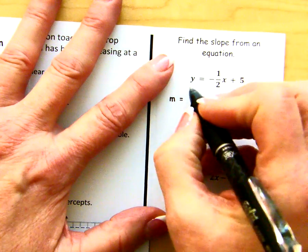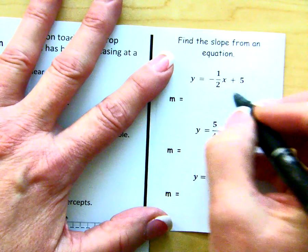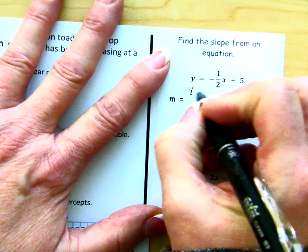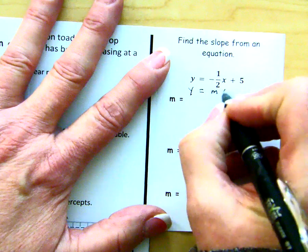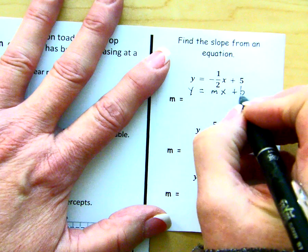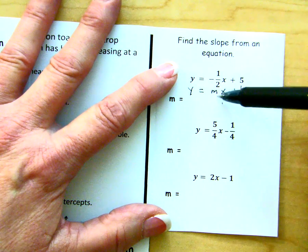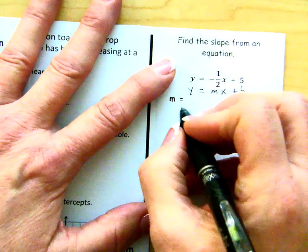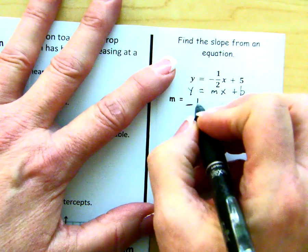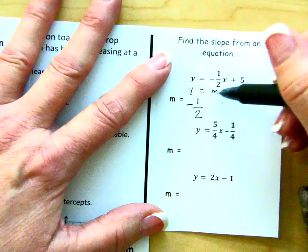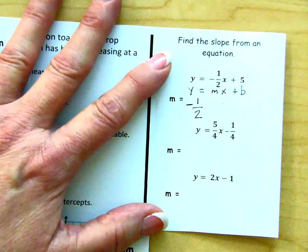First off, we have the equation y equals negative one-half x plus 5. So I'm just going to go y equals mx plus b. So here's where things line up. m is negative one-half. So right here, I'm going to say m is negative one-half. So from this equation, I have identified the slope as negative one-half.